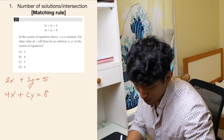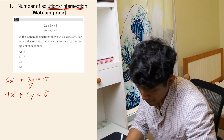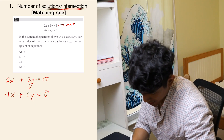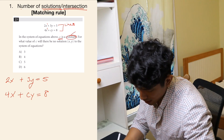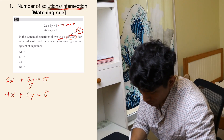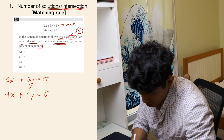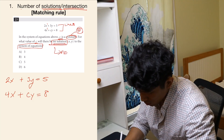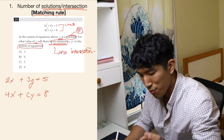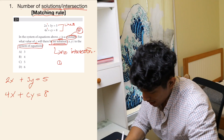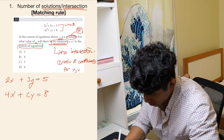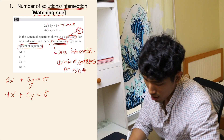Let's get into the first type: number of solutions and intersection. We have two equations, and both are lines because the highest exponent is one in each. The question asks: c is a constant — meaning c is a fixed number, not a variable — for what value of c will there be no solution to the system of equations? No solution means there will be no intersection.